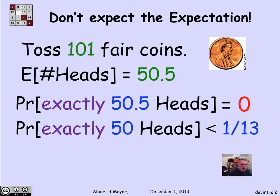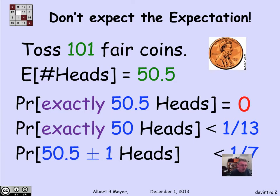Well, we can ask, what's the probability of getting as close as you could hope to get to the expectation? Namely, what's the probability of getting exactly 50 heads? And it's about 1/13th. Or if you ask, what's the probability of getting either 50 or 51 heads, being plus or minus 1 of the expectation, it's about 1/7th.